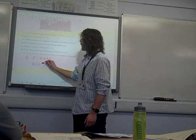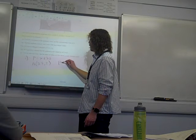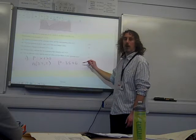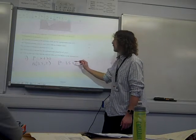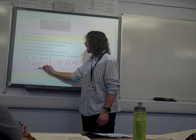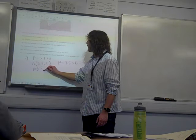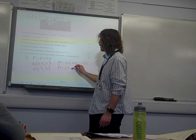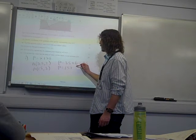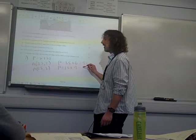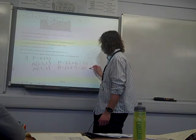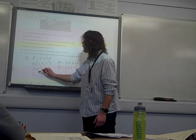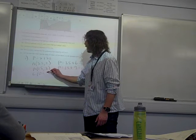A is (3.5, 2), so P is 3.5 plus 6, which I make to be 9.5. B is (1.5, 3), so P is 1.5 plus 9, which is 10.5. That's better.